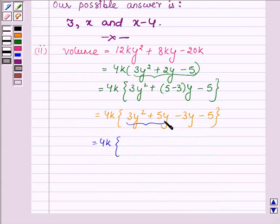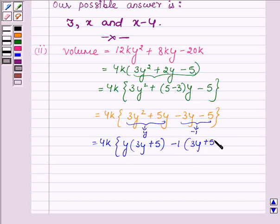Now taking y common from the first two terms and -1 common from the last two terms, we get 4k times (3y + 5) times y minus (3y + 5) times 1.